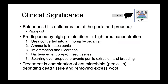Balanoposthitis in sheep — inflammation of the penis and prepuce — is colloquially known as pizzle rot. This disease is predisposed by high-protein diets: the more protein consumed, the more urea must be excreted as nitrogenous waste. Since Corynebacteria are urease producers, that urea is converted to ammonia, which irritates the penis, causing inflammation and ulceration. Bacteria then invade the compromised tissues, and ultimately scarring over the prepuce prevents penile extrusion and therefore breeding — a clear production-limiting disease and animal welfare issue.